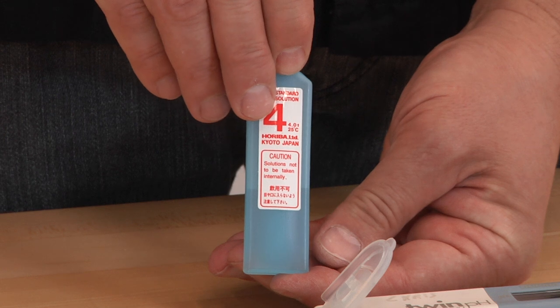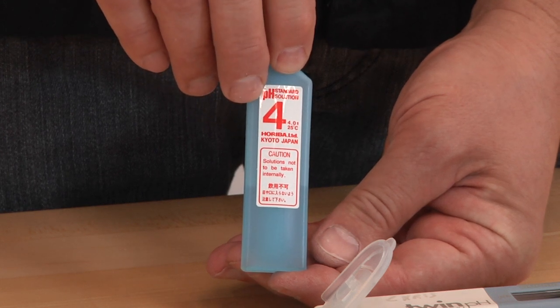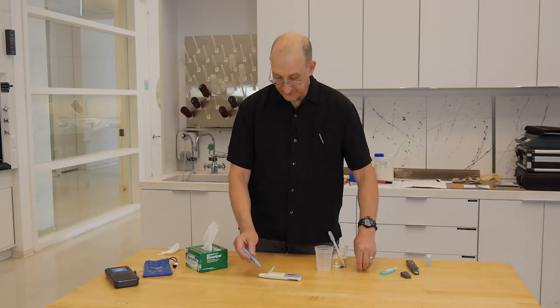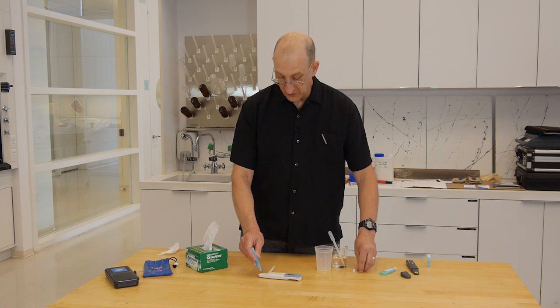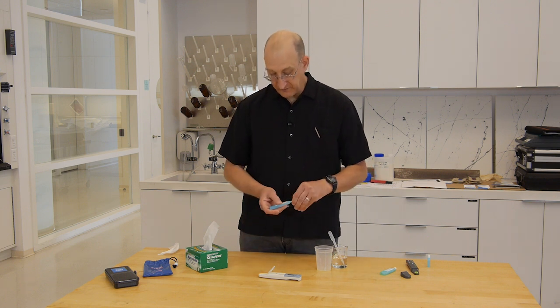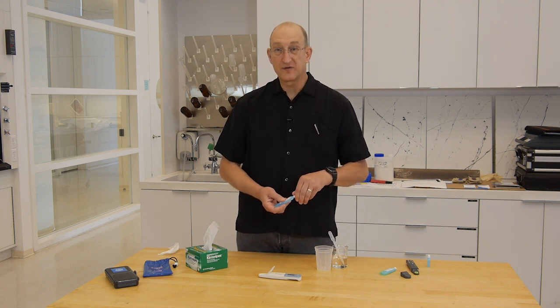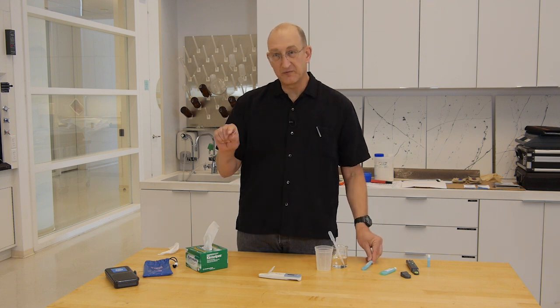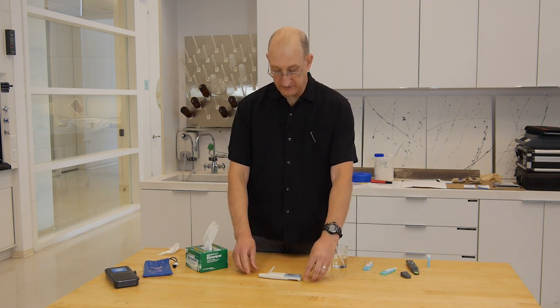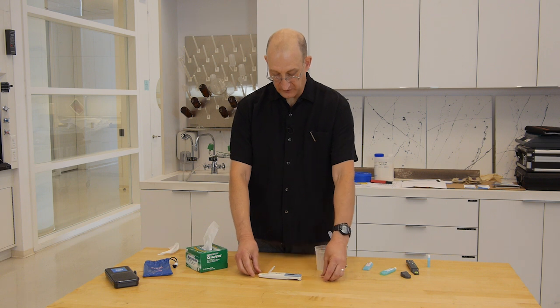Now we want to calibrate at pH 4. Use the pH 4 buffer solution. Again, fill the sample well. Make sure we have both the measuring and reference electrode dampened, and we have both in contact with liquid. The liquid is consistently across.